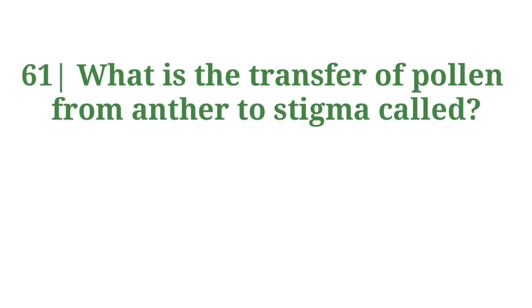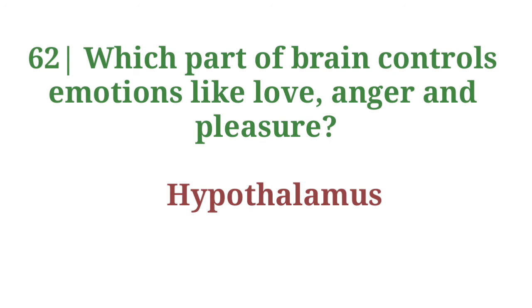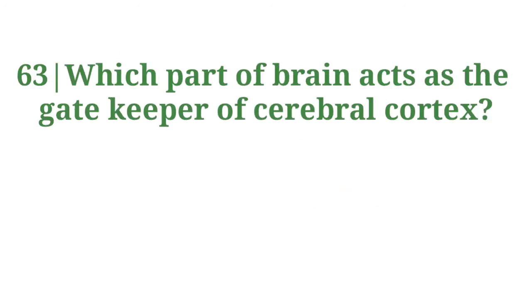What is the transfer of pollen from anther to stigma called? Answer: Pollination. Which part of the brain controls emotions like love, anger, and pleasure? Answer: Hypothalamus. Which part of the brain acts as the gatekeeper of the cerebral cortex? Answer: Thalamus.